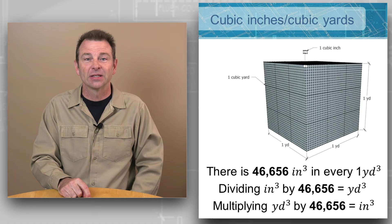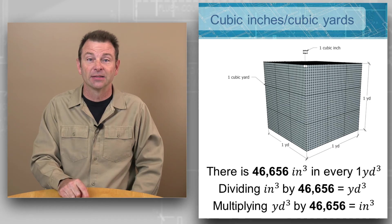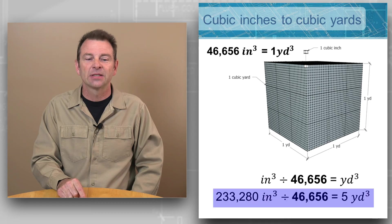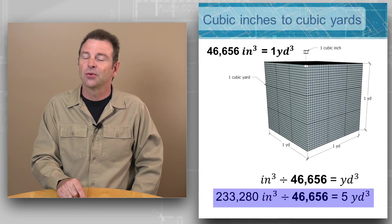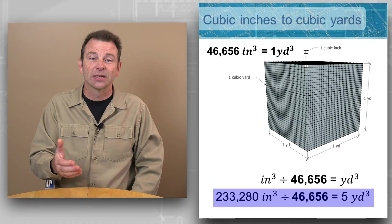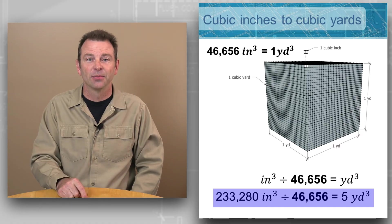Here's an example of cubic inches to cubic yards: 233,280 cubic inches divided by 46,656 is going to simplify to five cubic yards.